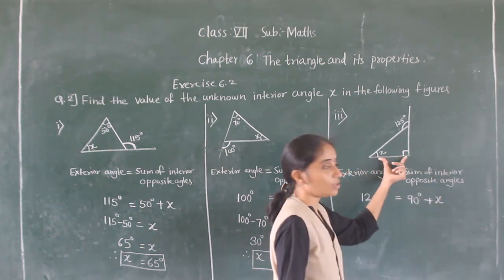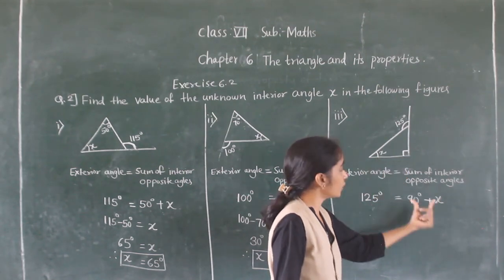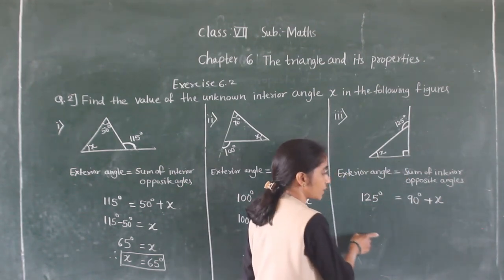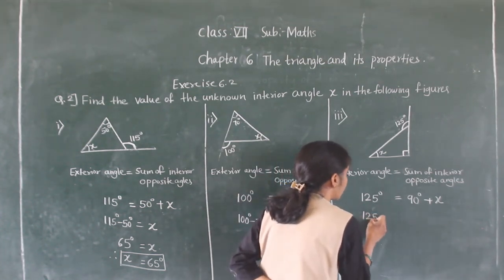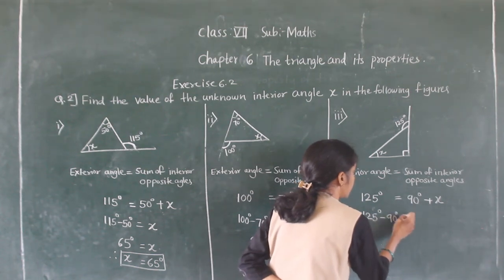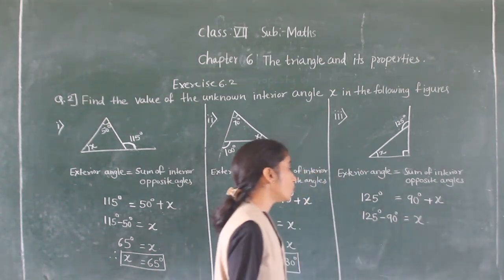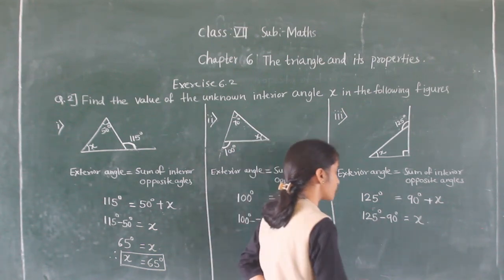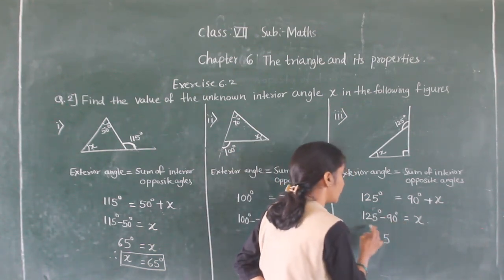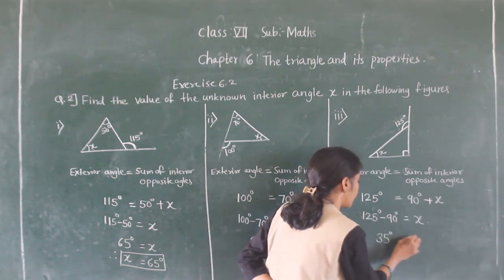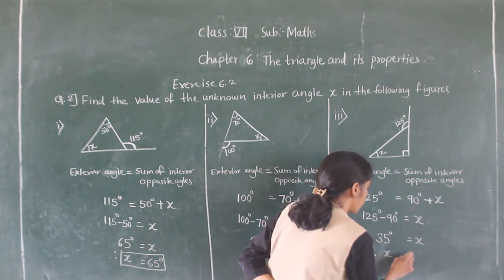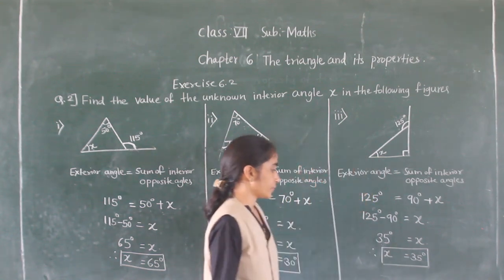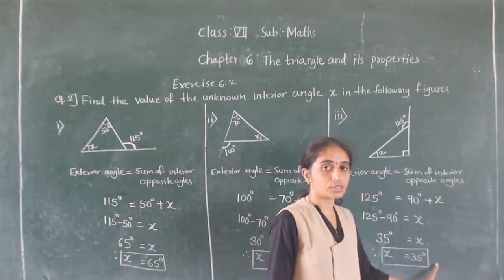The exterior angle is 125 degrees, equal to 90 degrees plus x. Transposing 90 to the other side: 125 minus 90 equals x. That gives us 5 minus 9... 35 degrees. So x is equal to 35 degrees.